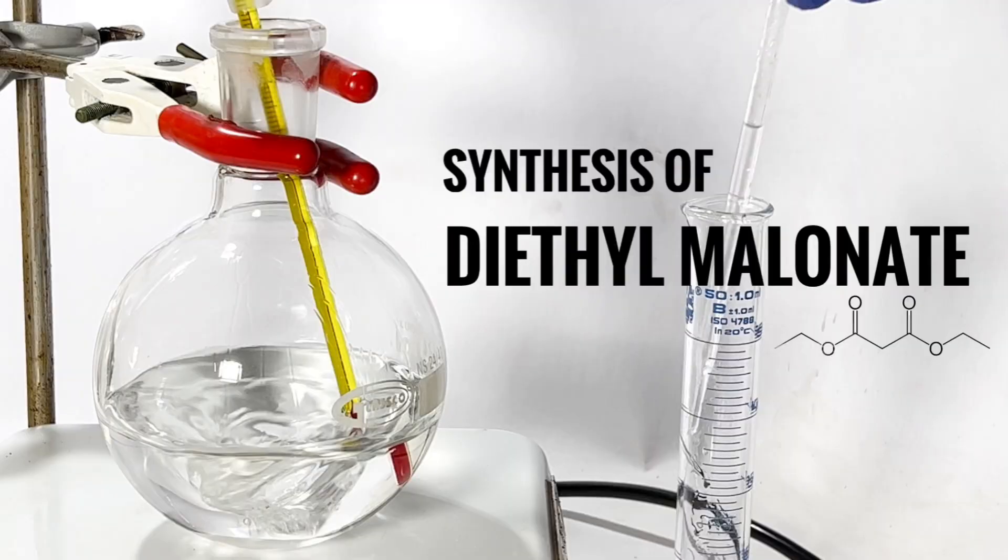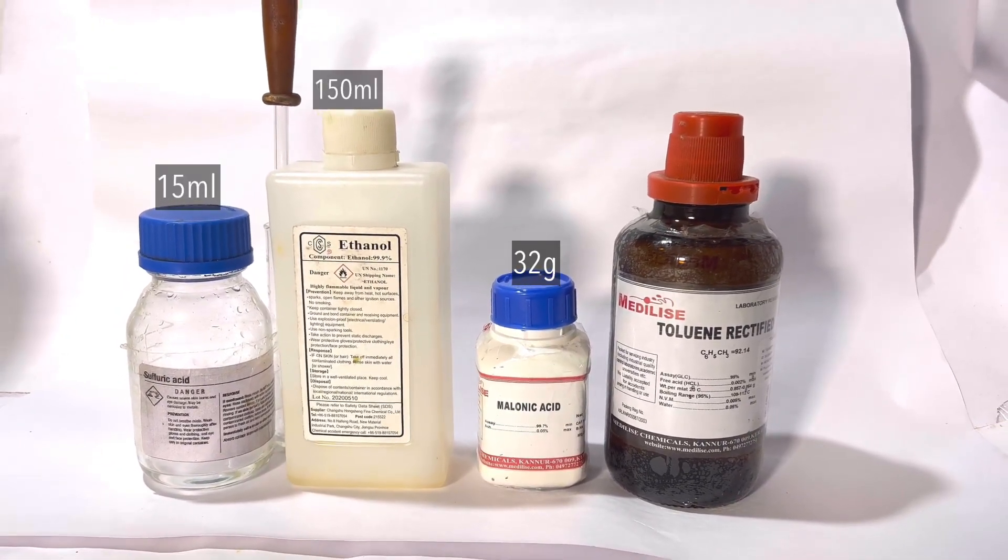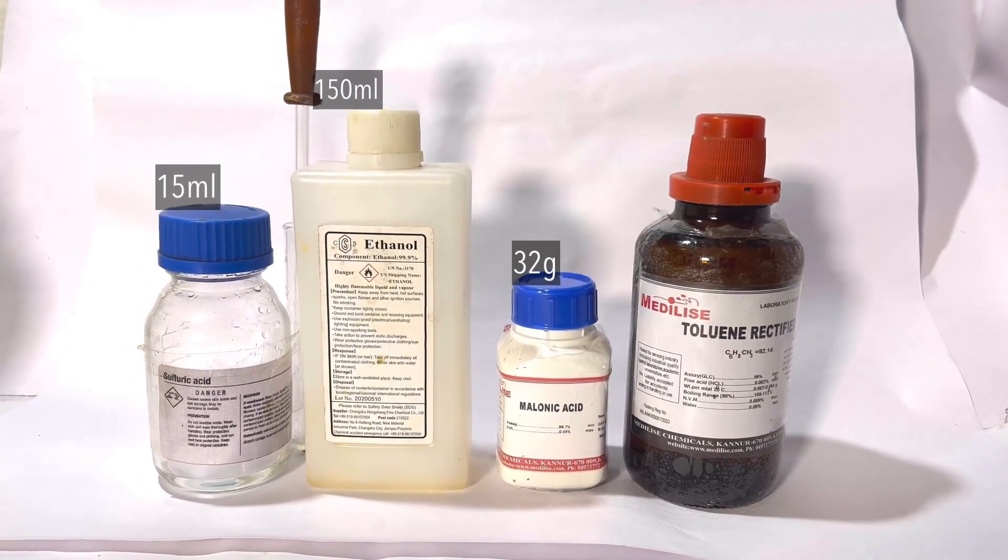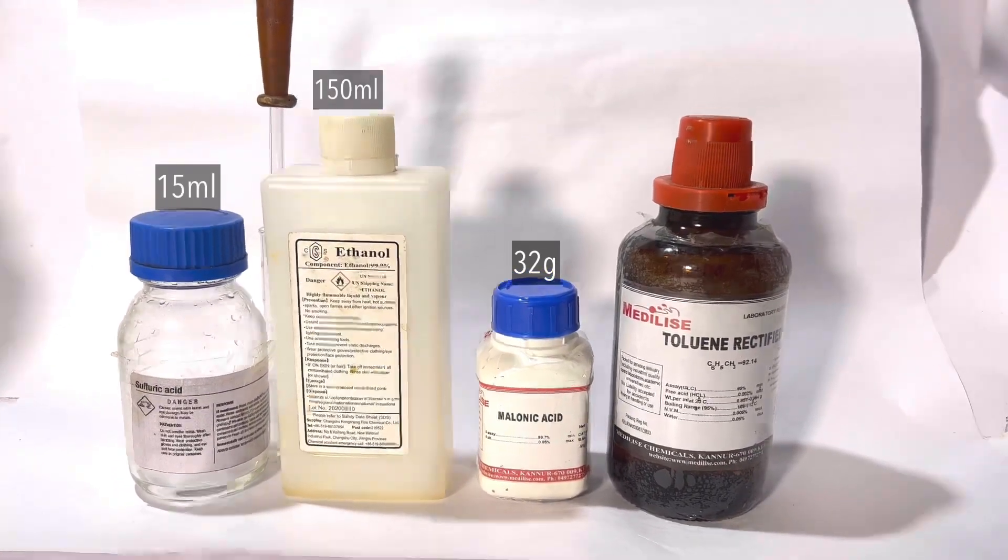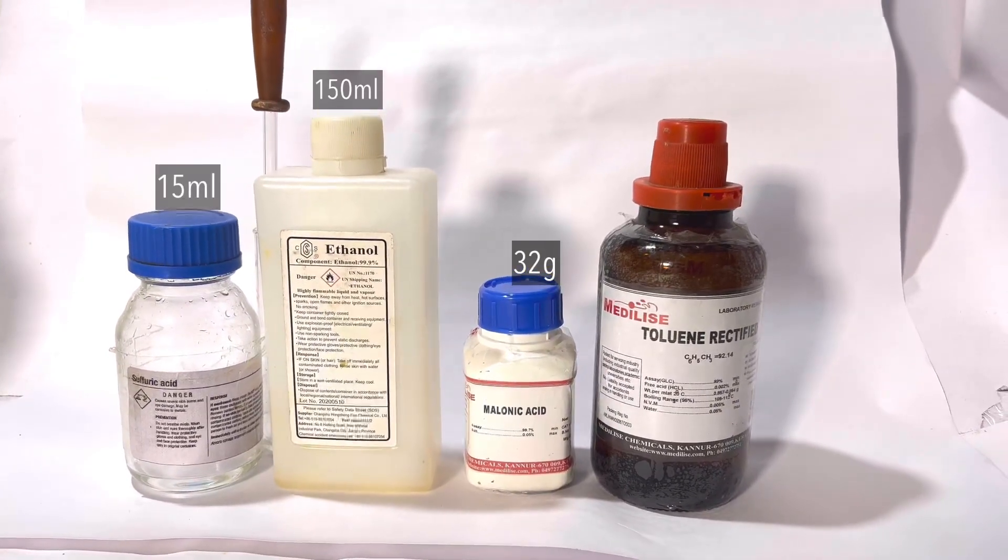Hello friends, in this video we will synthesize diethyl malonate via the Fisher esterification method using malonic acid and ethanol. Concentrated 98% sulfuric acid will be the catalyst. The chemicals required are 32 grams of malonic acid, 150 milliliters of absolute ethanol, 15 milliliters of concentrated 98% sulfuric acid, and toluene for solvent extraction.